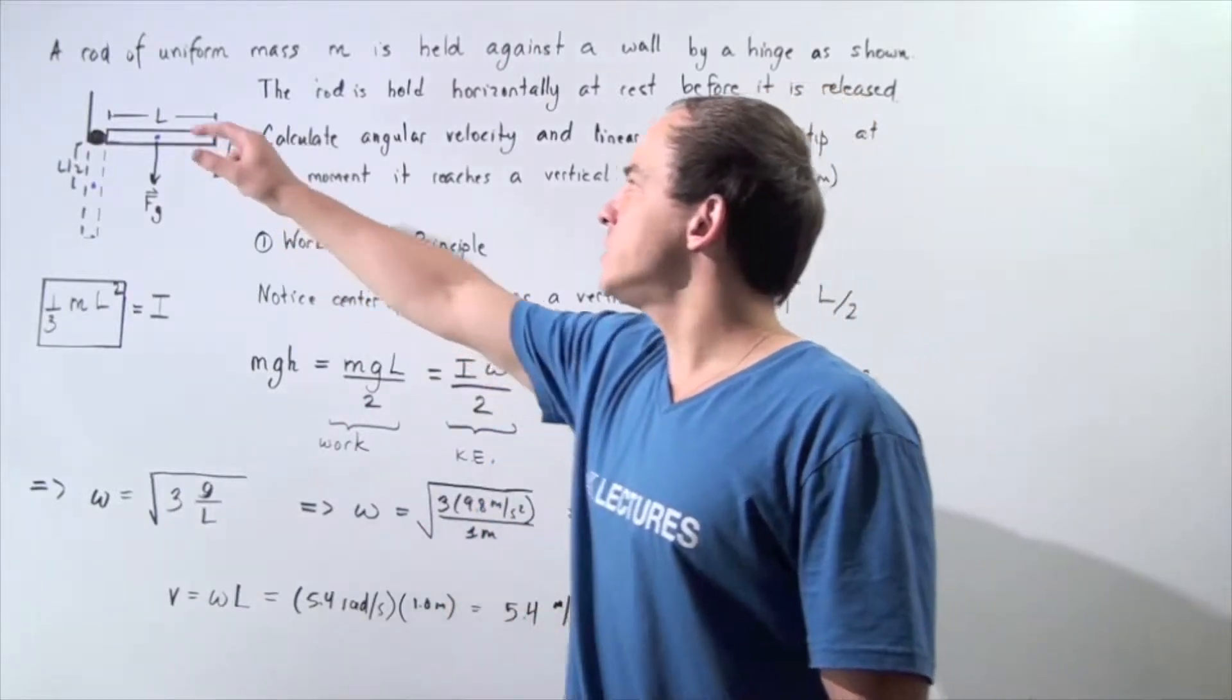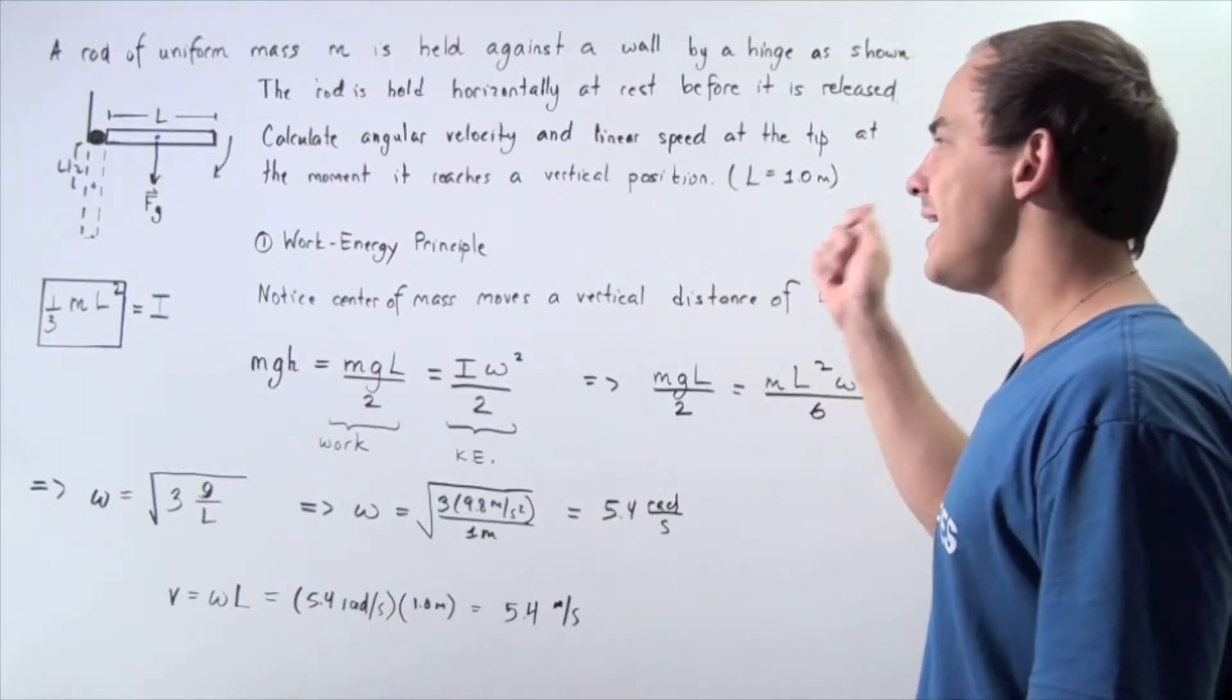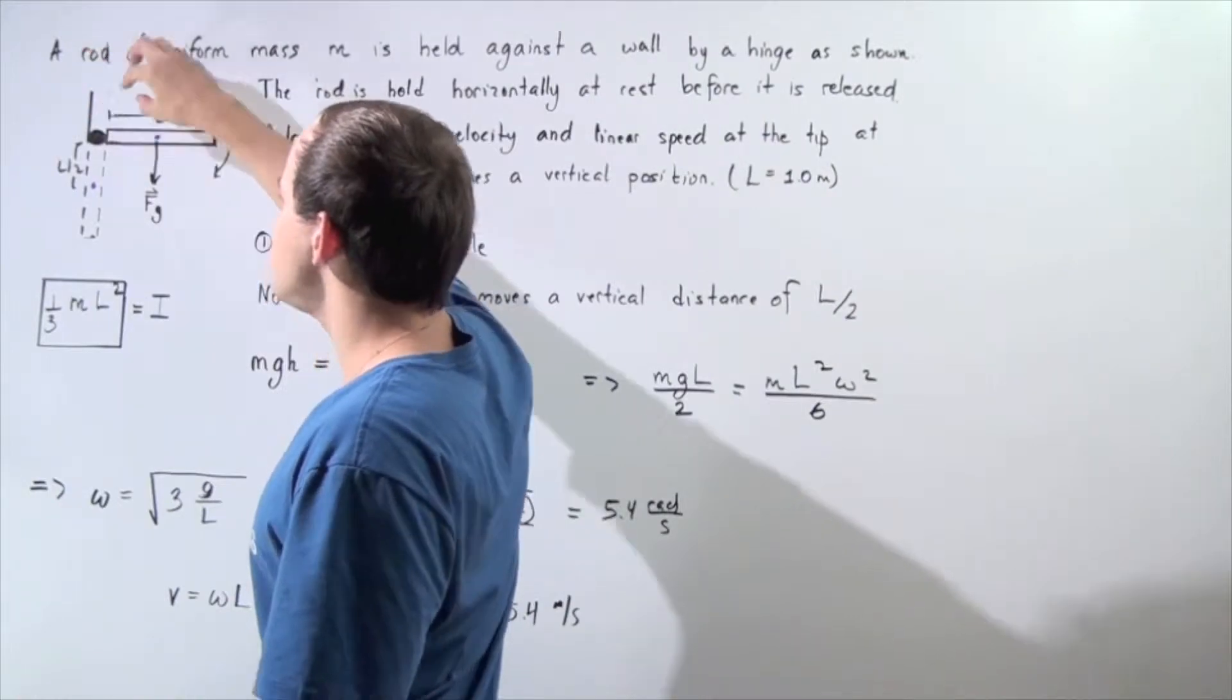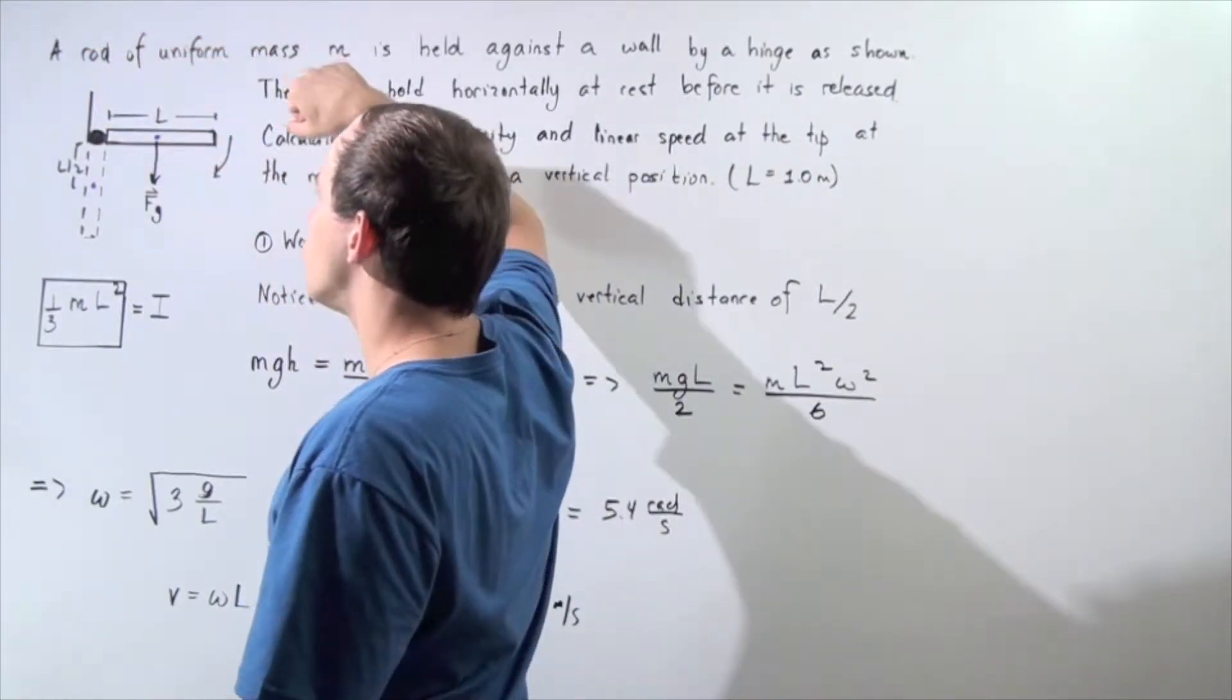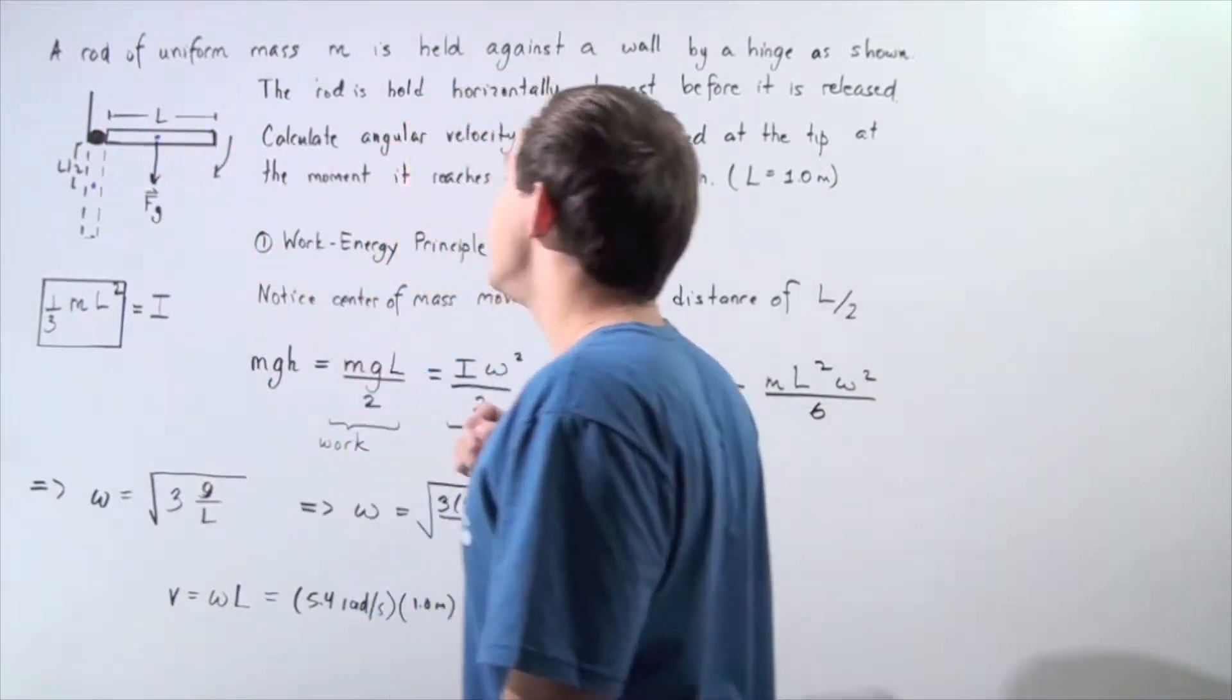Let's suppose that a rod of uniform mass m is held against the wall by a hinge as shown. So we have the following wall, we have the hinge, and we have the uniform rod of mass m that has a length of l.